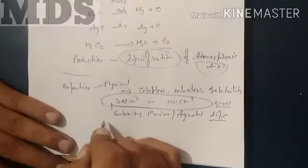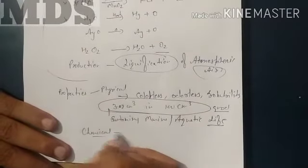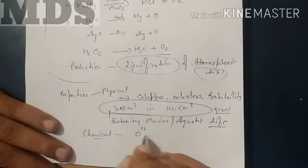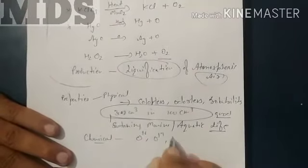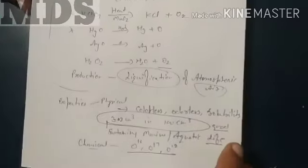And if you go for the allotropes particularly or mean to say chemical properties, you can explain that the oxygen has 3 kinds of isotopes, such as O-16, O-17, O-18. Three isotopes of oxygens are possible.